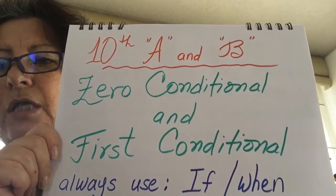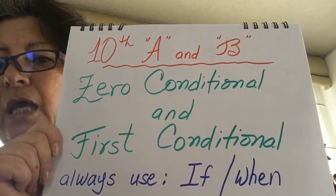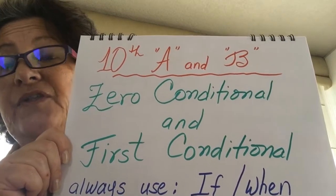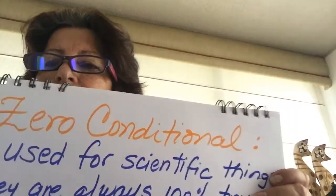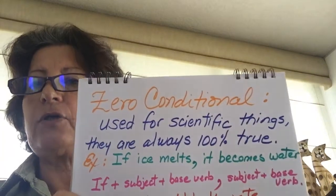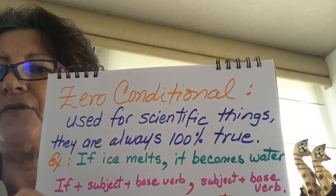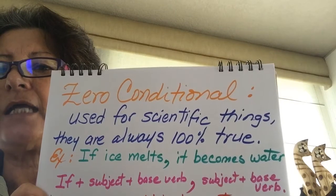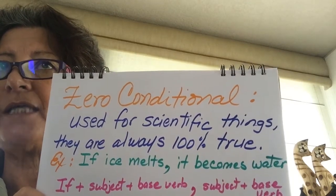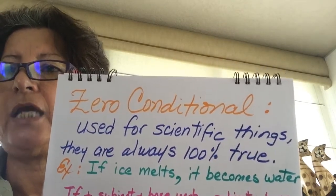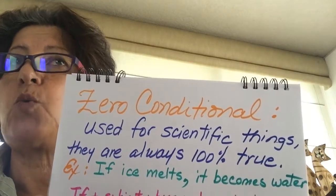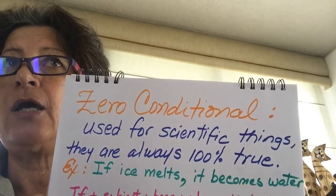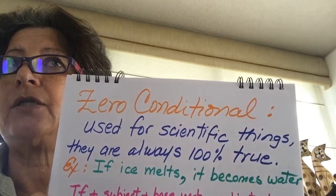When we use conditionals, we always use 'if' or 'when' when we start a sentence. The zero conditional is used when we are talking about scientific things — things that are a hundred percent sure, things that we cannot change. For example, if we don't wash our hands carefully, we catch the virus.